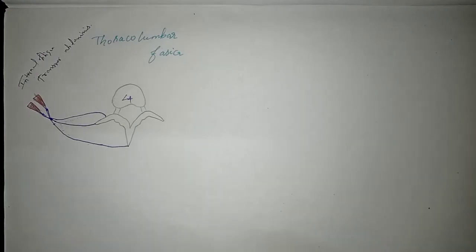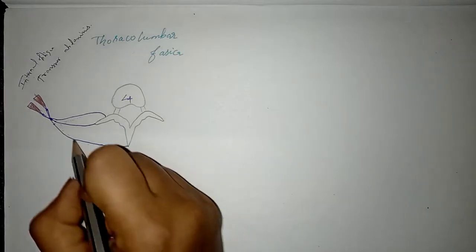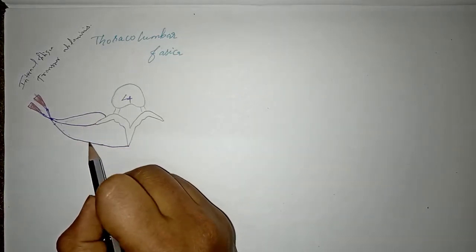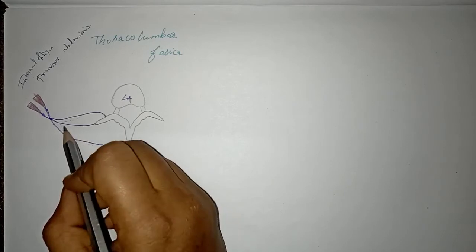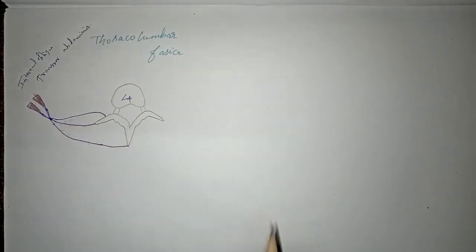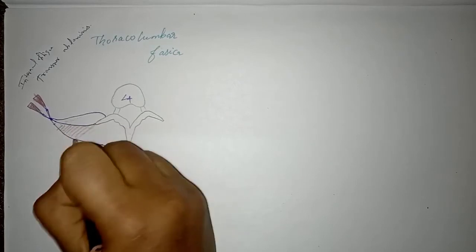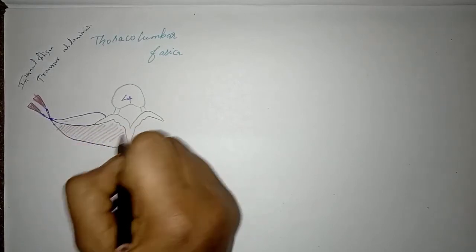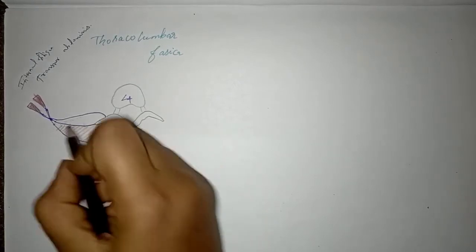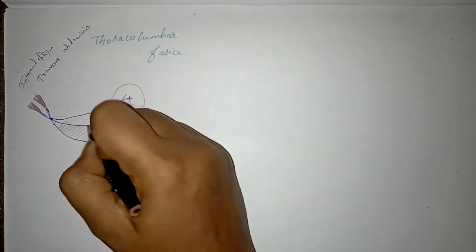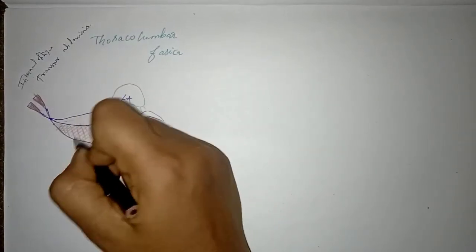In between the middle layer and the posterior layer, there is one muscle — the erector spinae.